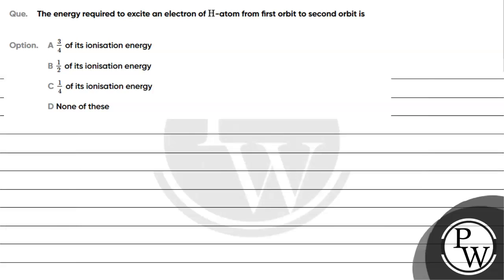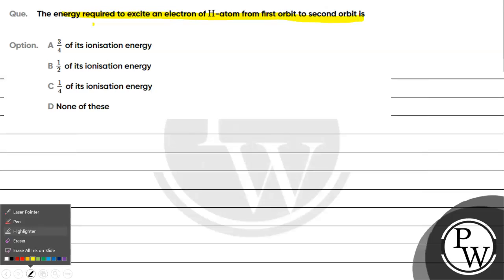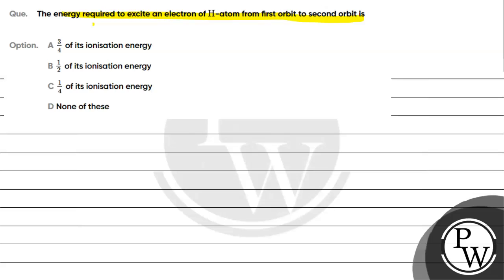Let's read this question. The question says: energy required to excite an electron of hydrogen atom from first orbit to second orbit is — option A: three by fourth of its ionization energy, option B: half of its ionization energy, option C: one by four of its ionization energy, option D: none of these.